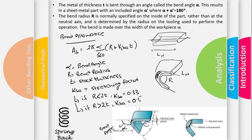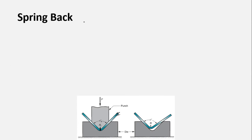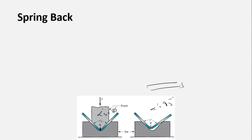Another phenomenon in bending is known as spring back. When the bending operation is performed and the punch is removed at the end of deformation, the elastic energy within the material causes it to try to regain its original shape. For example, if we bent the sheet metal to an angle alpha prime b of 80 degrees, once the punch is removed the angle may increase to 95 degrees, because the material tries to return to its original flat shape. This phenomenon is known as spring back.